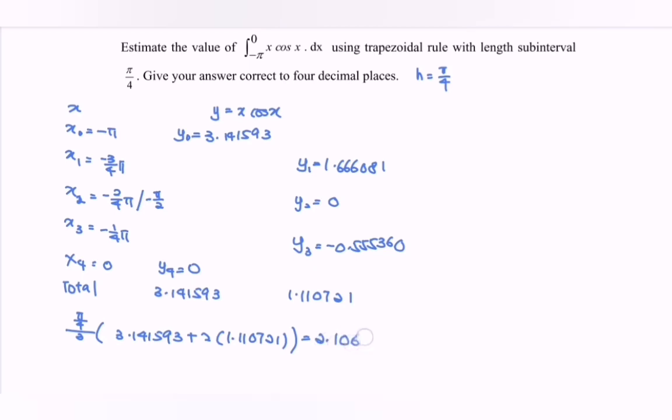So we will have the value 2 point... If you round up, correct to 4 decimal places, so approximate, 2.1061.